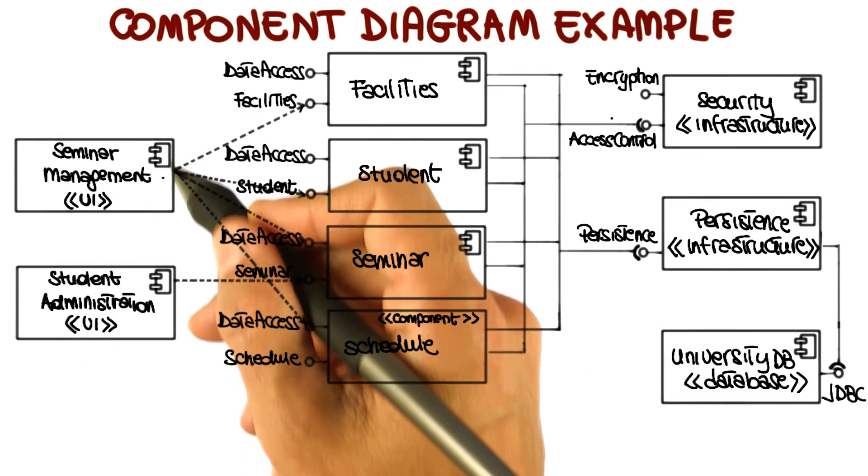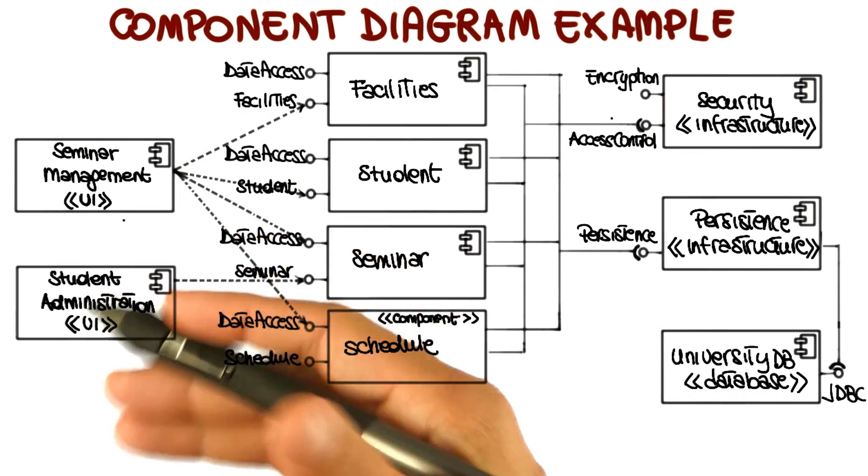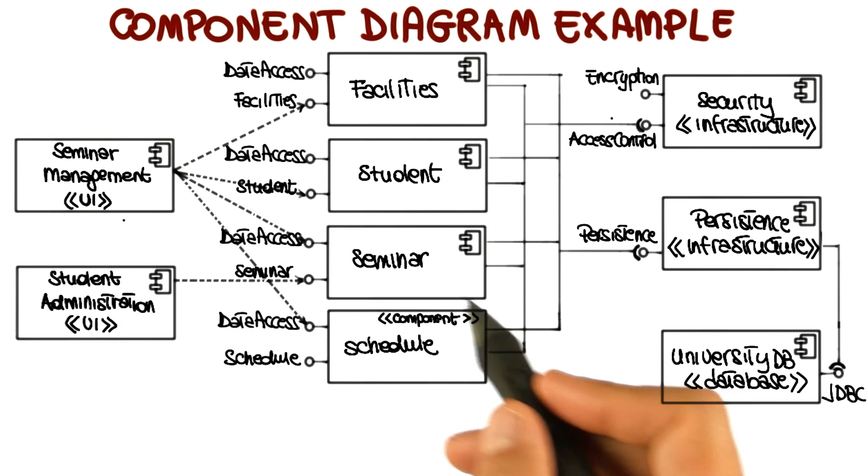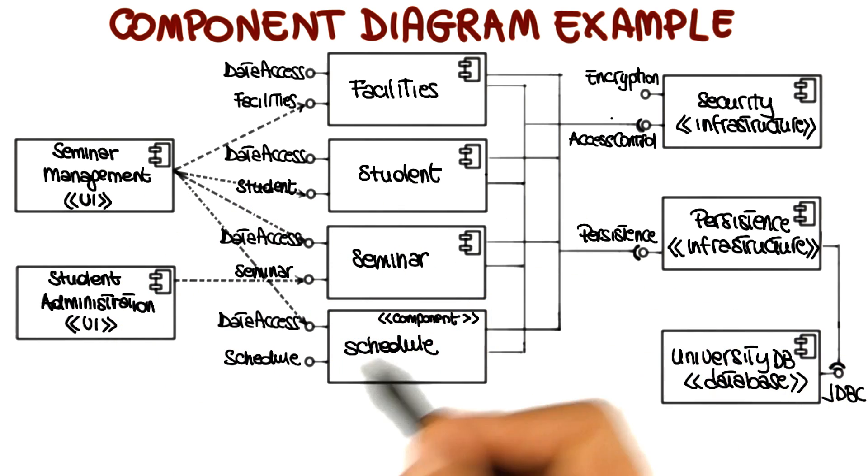So the first one is that these rectangular nodes are the nodes in the system, so are my components. For example, student is a component, schedule is a component, and so on.